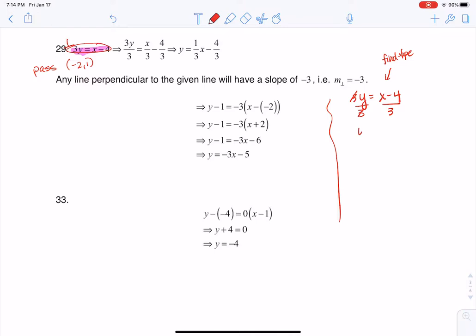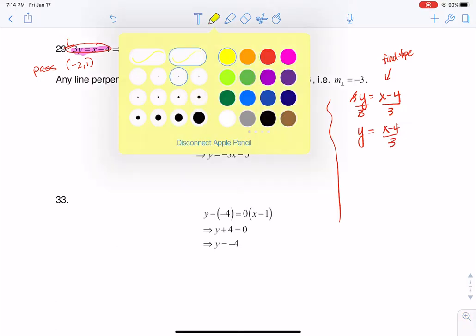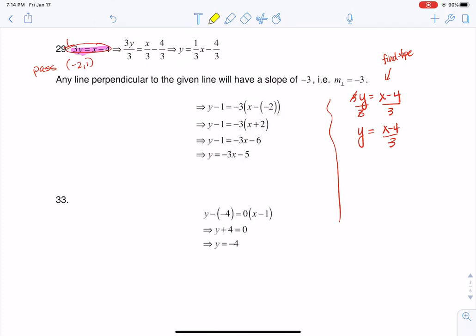The 3s will cancel out here, and I'm going to get y = (x - 4)/3, and you might think that's a rational function, but it's not, because there is no variable in the denominator. All we have is a constant, so I'm just going to distribute that 3 to the numerator.